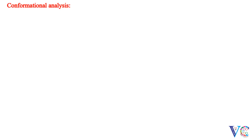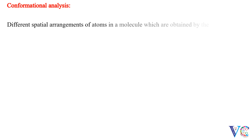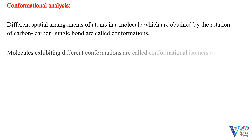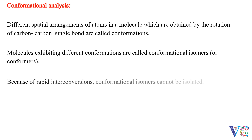Conformational analysis: different spatial arrangements of atoms in a molecule, which are obtained by the rotation of a carbon-carbon single bond, are called conformations. Molecules exhibiting different conformations are called conformational isomers, or conformers. Because of rapid interconversions, conformational isomers cannot be isolated.